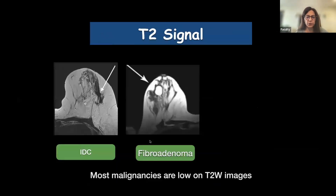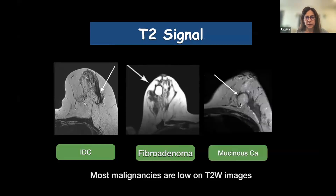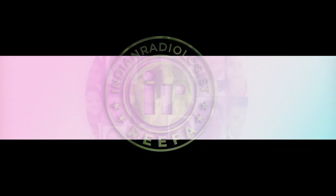With the new BI-RADS coming up, T2 signal is being included. As a general rule, T2 dark lesions are malignant and T2 bright lesions are generally benign — though there are lots of exceptions. For example, mucinous carcinoma will also appear T2 bright. But the key take-home is: T2 dark is malignant, T2 bright is benign.